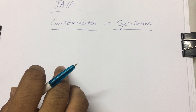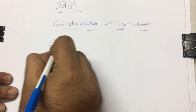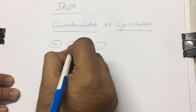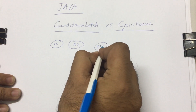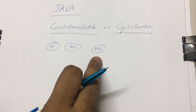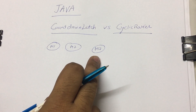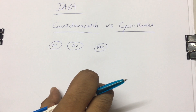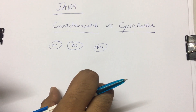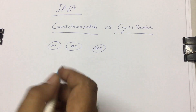Suppose you have a use case where you want to get data from three different microservices — m1, m2, and m3. These three microservices are deployed as REST services, and you want to wait until you get a response from all three of them.